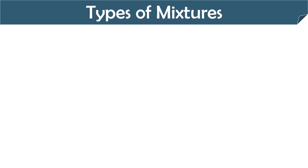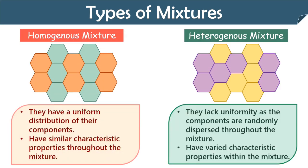We can classify mixtures into two types: homogeneous and heterogeneous. Homo refers to similar. Homogeneous mixtures have uniform distribution of their components and possess similar characteristic properties throughout the mixture. For example, when you make a solution of sugar, the sugar molecules get homogeneously distributed in the water. In contrast, hetero refers to diversity. Heterogeneous mixtures lack uniformity as the components are randomly dispersed, and the distinction between components is clearly visible. For example, if we mix sugar and rice, you can easily distinguish between them.